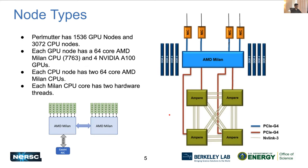Let's have a quick look at the node types. Each GPU node consists of one AMD Milan CPU with 64 hardware cores, a total of 128 hardware threads, and four Ampere A100 GPUs. The total memory available on a GPU node is 256 GBs, where each Ampere GPU contains 40 GBs of HBM. The CPU nodes contain two AMD Milan CPUs, so the total number of hardware cores on a CPU node is twice that of the GPU node — 512 GBs of memory.